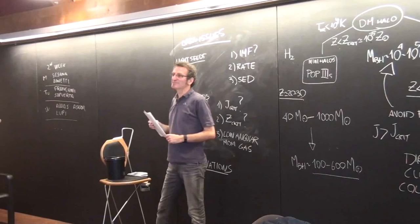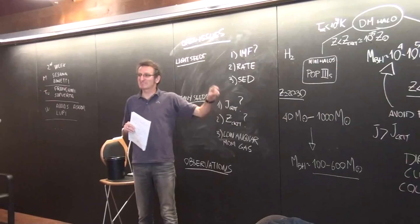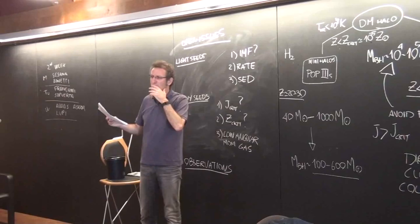There was a press release, exactly. They claim to have seen a clear signature of a direct collapse black hole. If you remember, it's about redshift six or something, right? I don't remember.